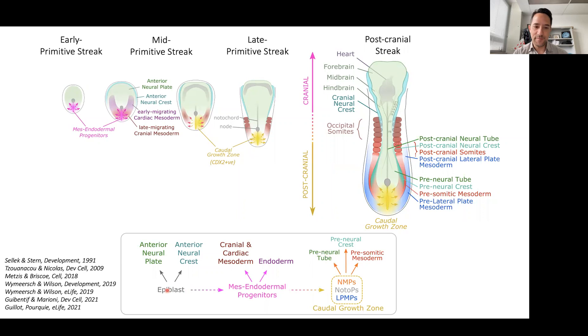For them, epiblast cells first transition to mesendodermal progenitors, these then transitioned to progenitors in the chordal growth zone. Now, the chordal growth zone is at this moment in time a very poorly understood mixture of multiple progenitor pools